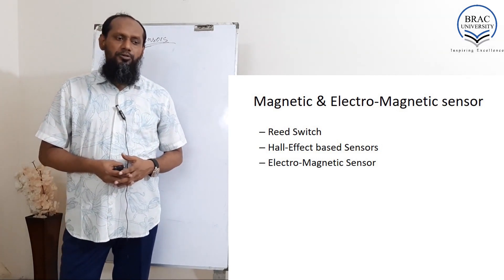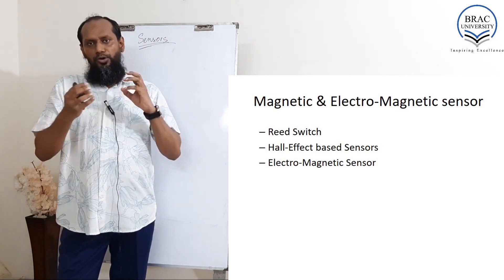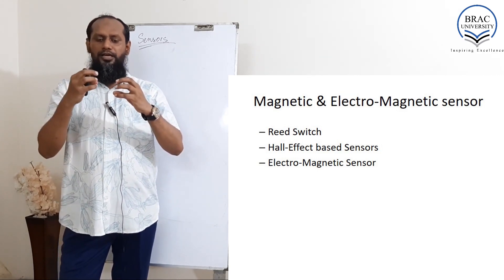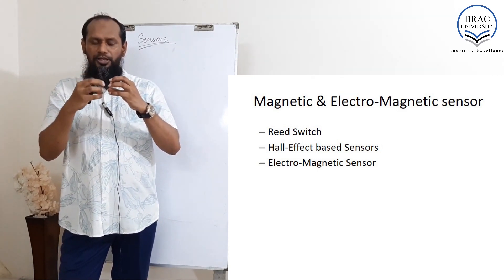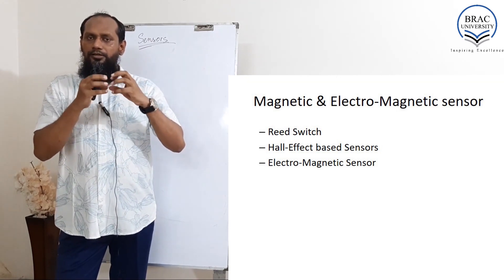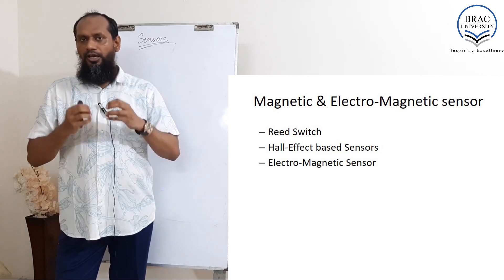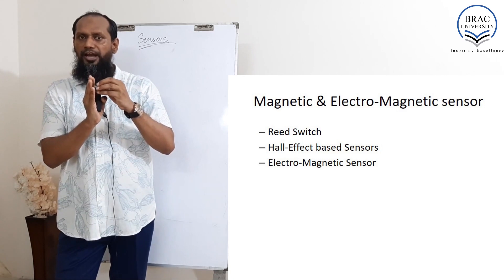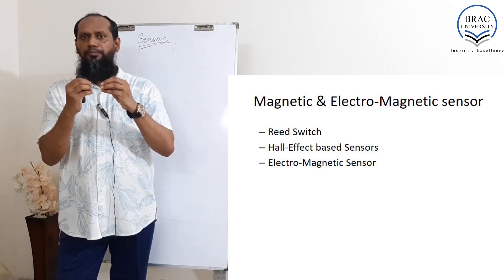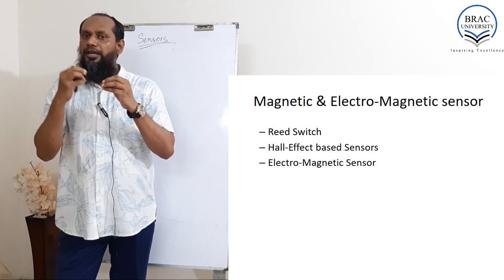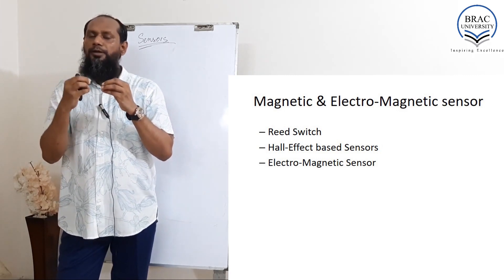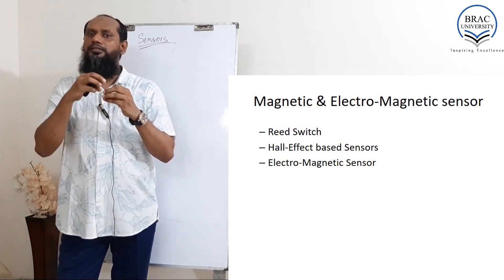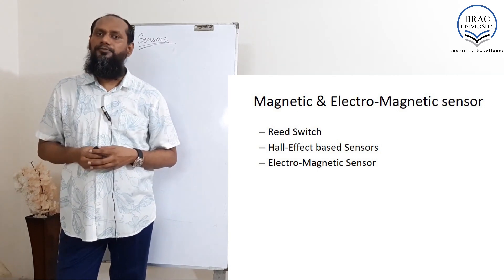In magnetic and electromagnetic sensors, the main characteristic is the electric coil. If any magnet comes near the electric coil and it moves, then the electricity flow changes. Even if there is a fixed coil and a fixed magnet, if any magnetic material comes near, the flux changes and the electric flow of the coil is changed.